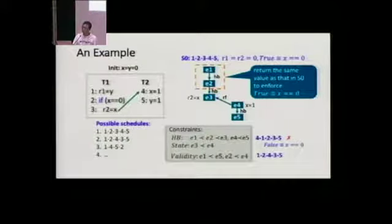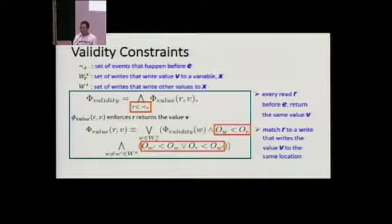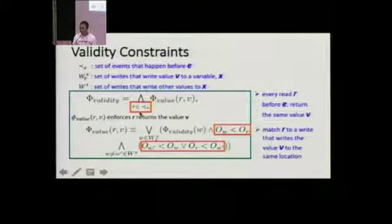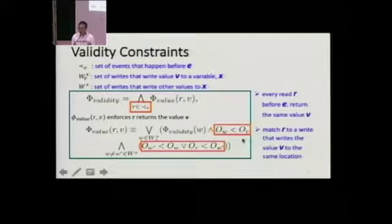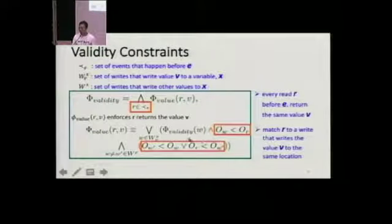Like here, it enforces E1 and E2 to return the same value to make E3 reachable in the new schedule. By solving the constraints, we can generate the correct schedule. As we can see from the previous example, the validity constraints guarantee the reachability of each event in the program. This constraint consists of two parts: first, it enforces each read that happens before the considered event to return the same value. To make this happen, it matches the read to the corresponding write to read from the exact value, and for all other writes, they should either happen before this write or after this read. This constraint is complicated because it is recursive.